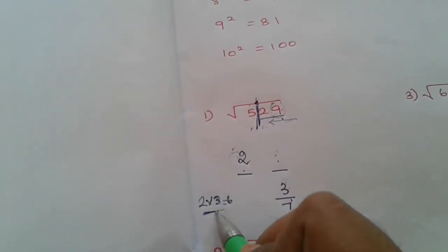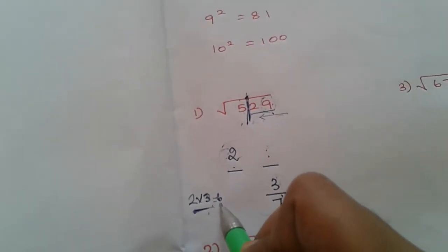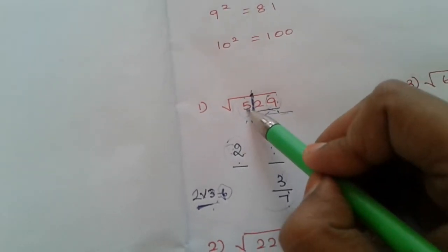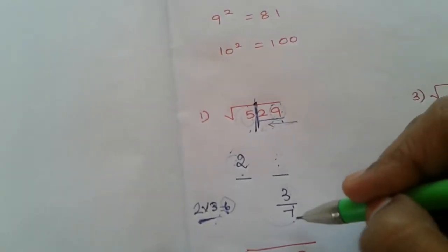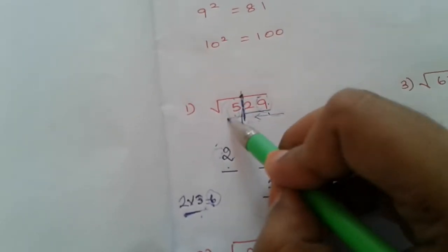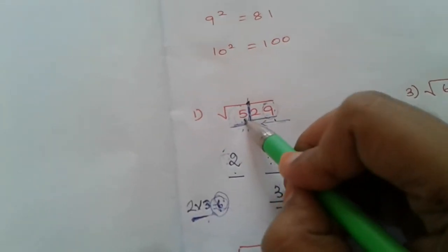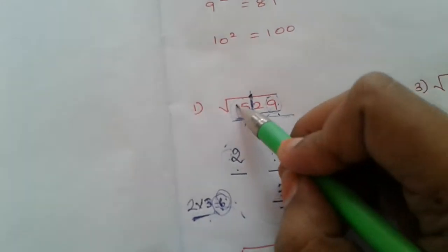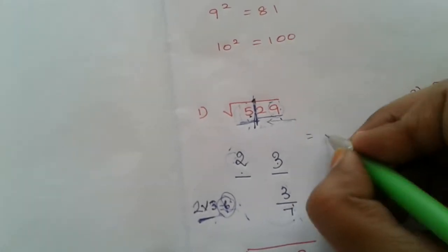Now if we ask the square root of 3, what are the numbers? 3. So we ask for 5, for 6 — let's compare. If we ask the number of 2, what are the numbers? We compare with 6. So if it is a smaller one, the answer is the smaller one. So answer is 3. So the answer is 23.